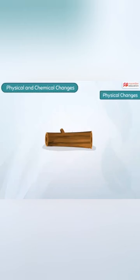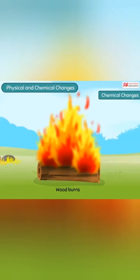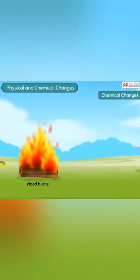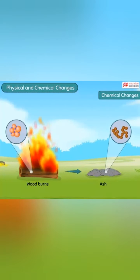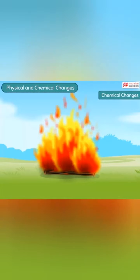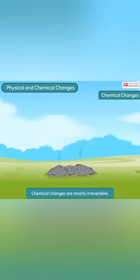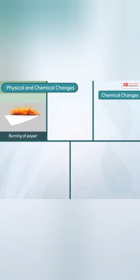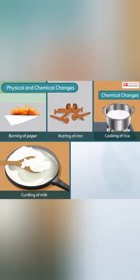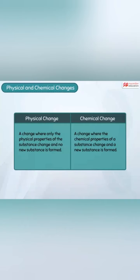Look at this log of wood — even after being cut from the tree, the wood remains the same. But when this log of wood is set on fire, upon burning the wood changes into ash. Ash is a new substance with different chemical properties than wood and cannot be changed back into wood. Such a change where the chemical properties of the substance change and a new substance is formed is called a chemical change — chemical changes are mostly irreversible. Burning of paper, rusting of iron, cooking of rice, curdling of milk, and ripening of fruits are all chemical changes.